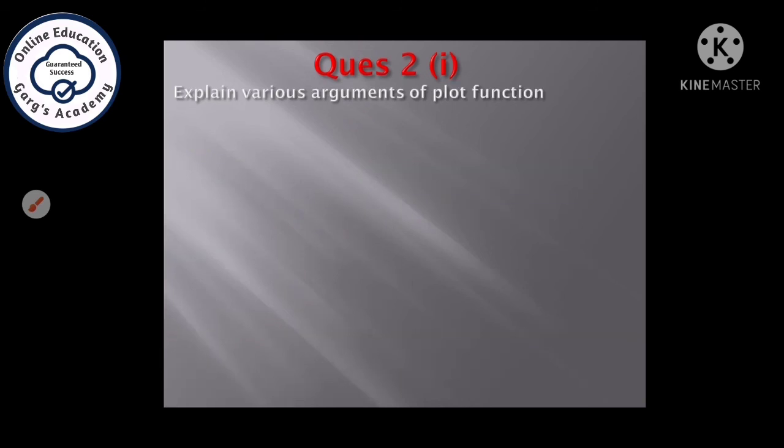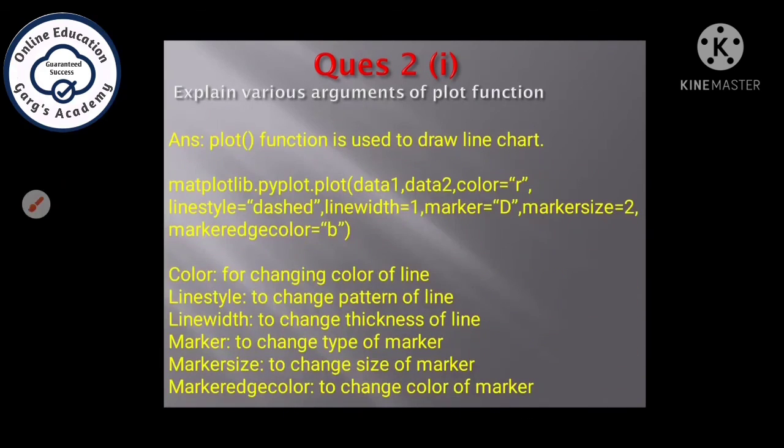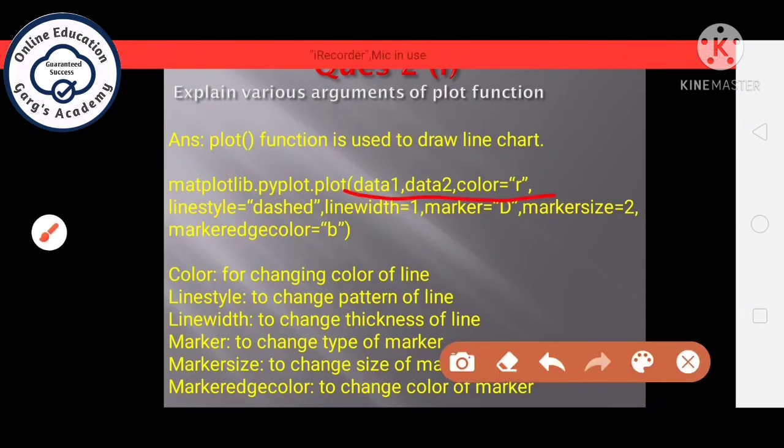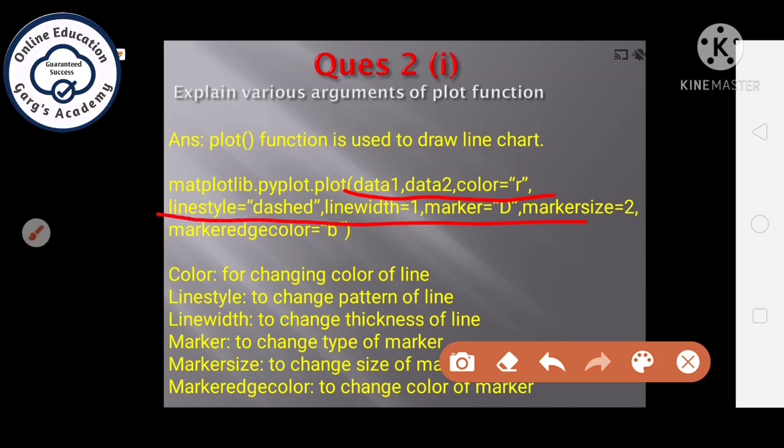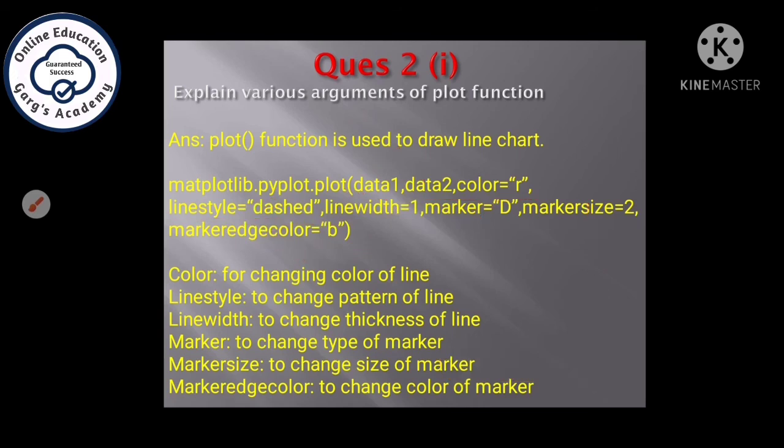Next question. Explain various arguments of plot function. Plot function is used to draw line chart and the various elements are these ones. Here, data 1 is the first data series which will be plotted on x-axis, data 2 is the second data series which will be plotted on y-axis. Color is used to change the color of line, line style is used to change the pattern of line, line width is used to change the width of the line, how thick will be the line. Marker is used to change the shape of the marker, marker size is used to change the size of the marker and marker edge color is used to change the color of the marker. So, you have to explain this properly in this way.